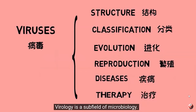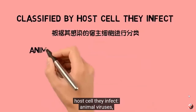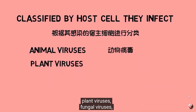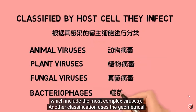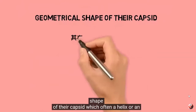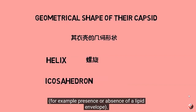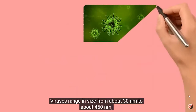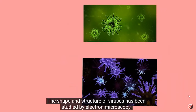A major branch of virology is virus classification. Viruses can be classified according to the host cell they infect: animal viruses, plant viruses, fungal viruses, and bacteriophages — viruses infecting bacteria, which include the most complex viruses. Another classification uses the geometrical shape of their capsid, which is often a helix or an icosahedron, or the virus's structure — for example, presence or absence of a lipid envelope. Viruses range in size from about 30 to 450 nanometers, so most cannot be seen with light microscopes. Their shape and structure has been studied by electron microscopy, NMR spectroscopy, and X-ray crystallography.